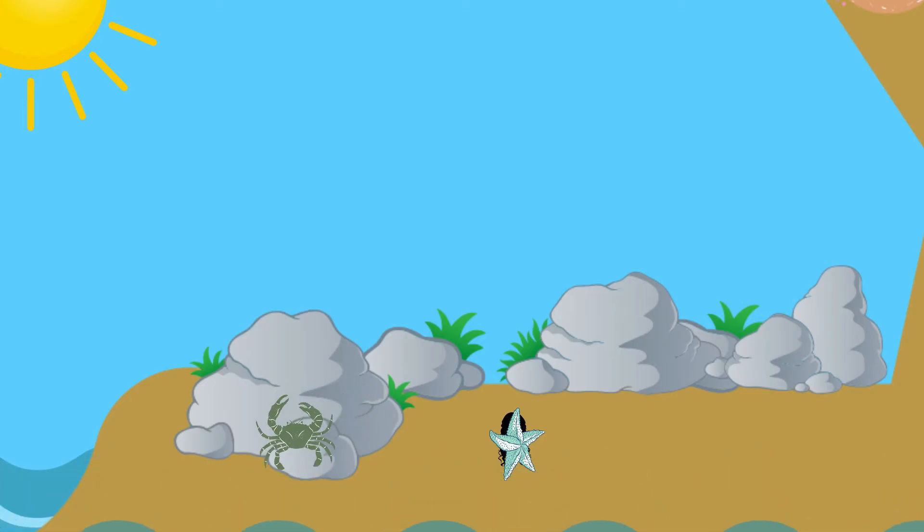This crab is also headed towards the water, and Jonah is going to follow him. As Jonah slowly uses his numerous tube feet to move down towards the water, he sees a lonely sea urchin perched on a rock.